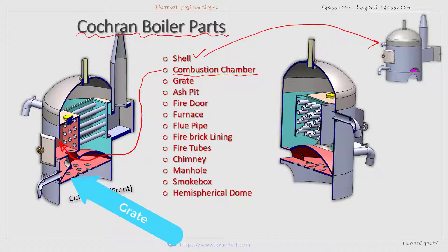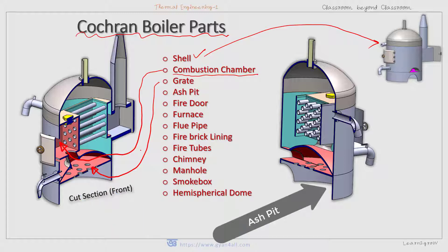The grate is the platform on which the fuel is burnt. The ash pit is the place where ash is deposited at the bottom of the grate.